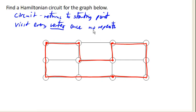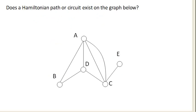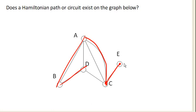Let's look at another one. Does a Hamiltonian path or circuit exist on the graph below? In this case, there is no way to find a Hamiltonian circuit. That's pretty clear, because if I start at vertex E and come down to C, there's no way for me to get back to my starting point without visiting vertex C again. So if I come out here, go here, go here, and now I want to get back to E, the only way to get there is to go back to C — and that's bad. So there's no Hamiltonian circuit.